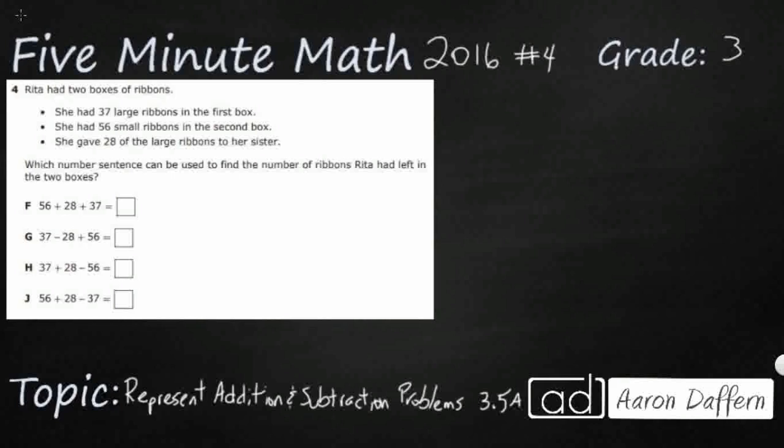So the first thing you probably noticed is that our answer selections, A, B, C, and D, in this case it's F, G, H, and J, they don't even want us to solve to find a final answer. We are just looking at how we can represent, in this case we are representing with the number sentence, how we can represent the problem situation.